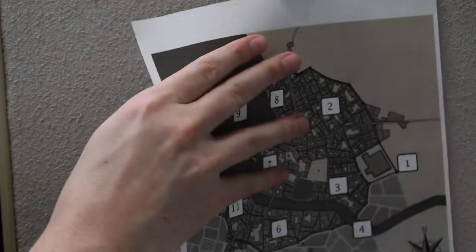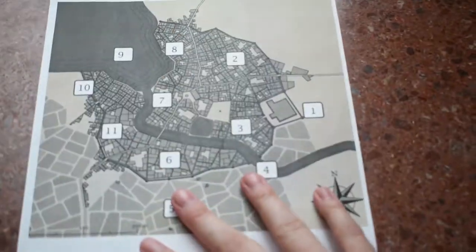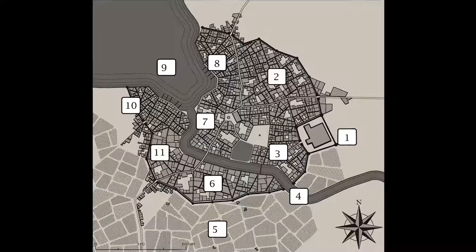I thought today I would show you a little bit about what I've been working on. It's this map that I've been working on. So for the fantasy novel with the musketeer, one of the big things that I really wanted was to capture the feel of a big city.